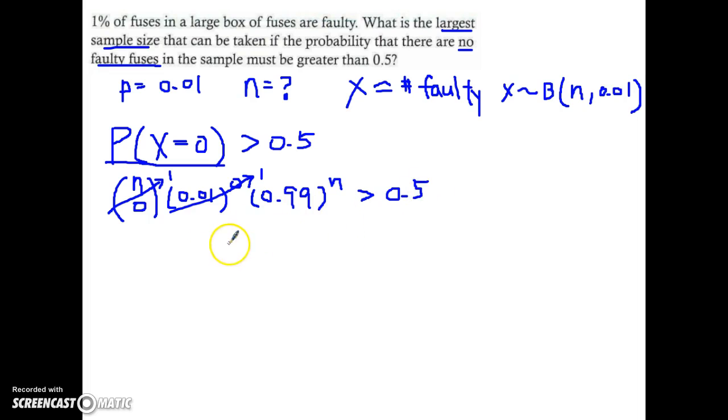And next I'm going to do, I'm just going to take natural log to both sides. So I will have n times ln of 0.99 is greater than ln of 0.5.